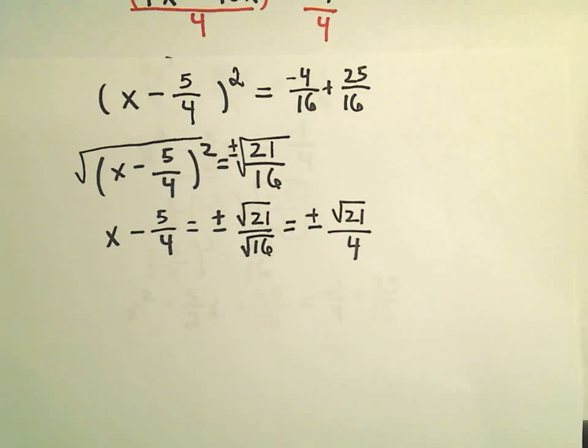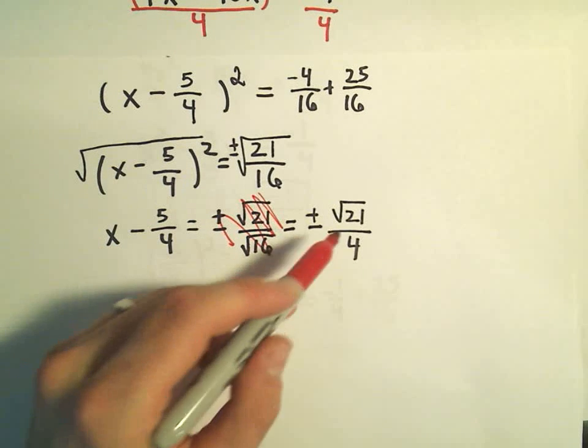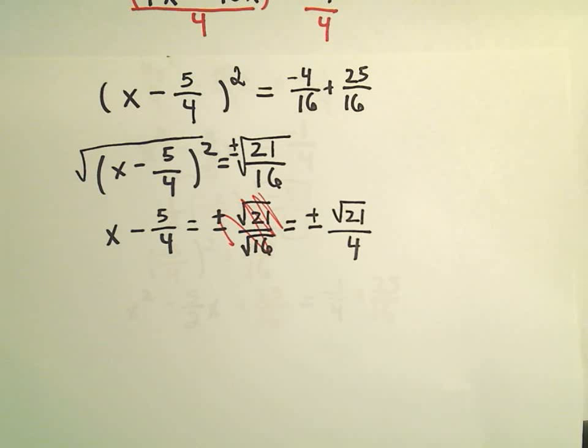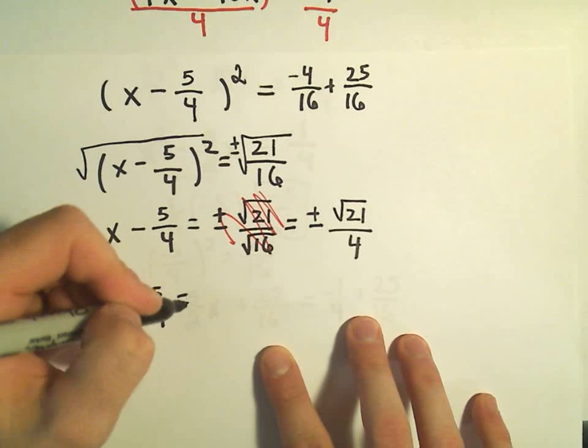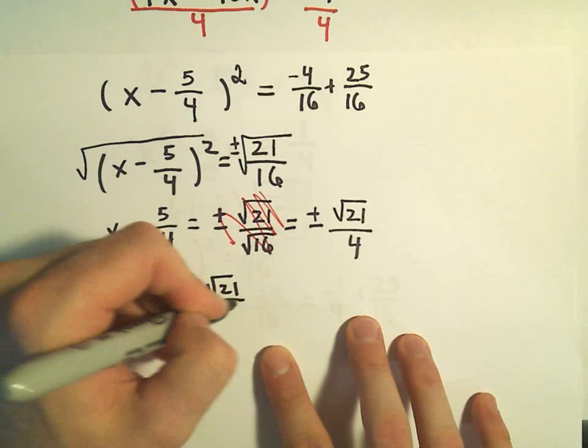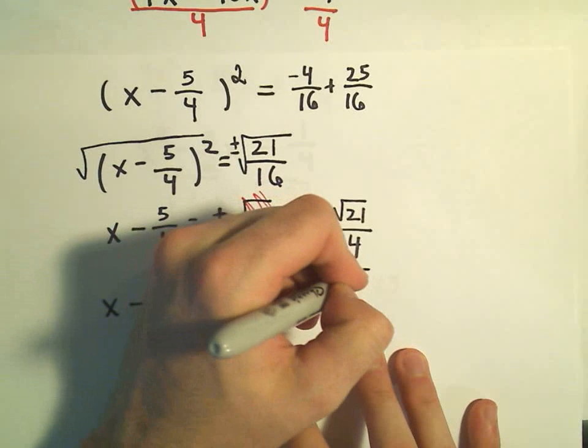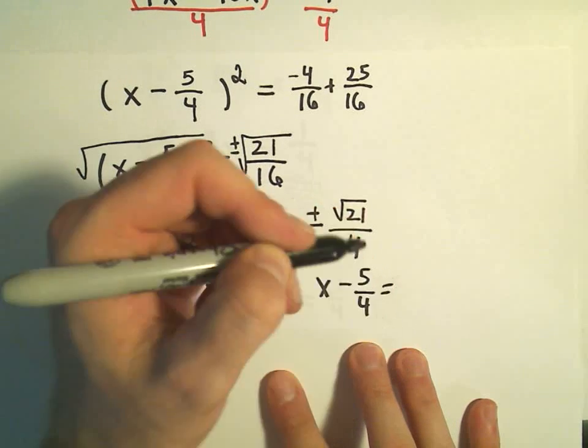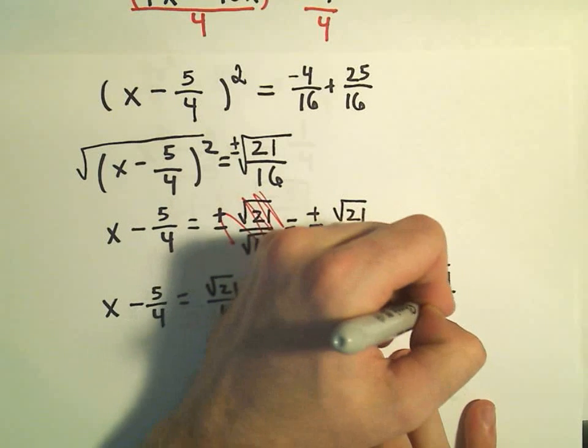So really, I'm going to think, well, we've got x - 5/4 = ±√21/4. So again, now we just make our two little equations and solve. So we'll have to take x - 5/4 = +√21/4. And then we're also going to have to solve x - 5/4 = -√21/4.